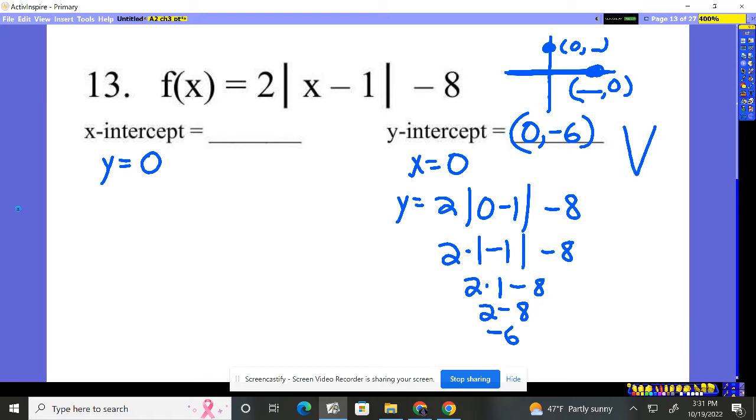Do you remember an absolute value is a nice little v? So I do know that that guy's crossing at zero, negative 6, wherever this guy happens to be. The x-intercept. Okay, x is a little bit more difficult.